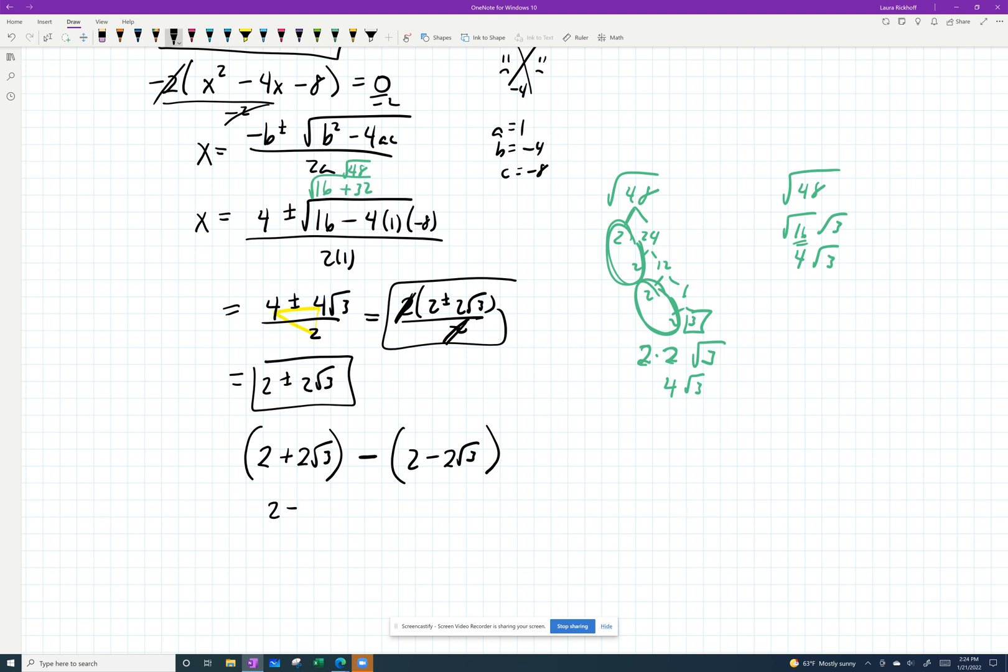And so that's 2 plus 2 root 3 minus 2 plus 2 root 3. So the 2's cancel, and you've got just 4 root 3 as the difference.